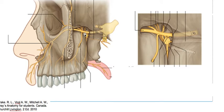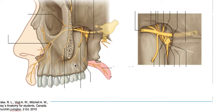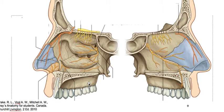Then we have the ganglionic branches. Here we have the pterygopalatine ganglion, which has ganglionic branches giving rise to pharyngeal, palatine, and nasal branches. The palatine nerve divides into the lesser palatine nerve and the greater palatine nerve. The lesser palatine nerve innervates the soft palate; the greater palatine nerve innervates the hard palate and gives rise to some nasal branches, which are the posterior inferior lateral nasal branches in the lateral wall.